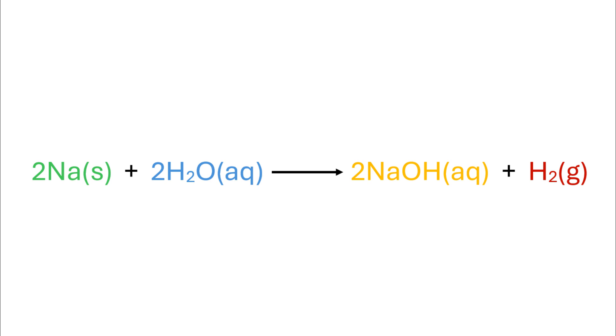The solution formed at the end of the reaction is sodium hydroxide, which is a strong base, also known as an alkali. Due to its basic nature, it turns red litmus blue.